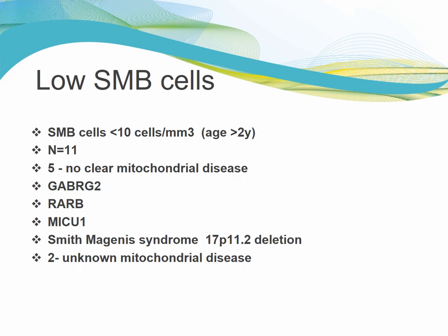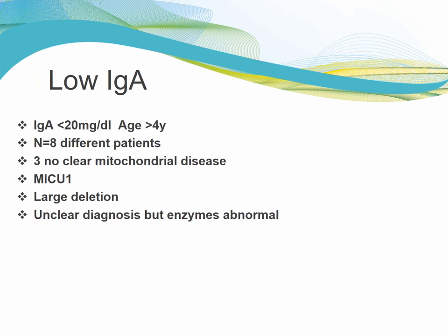I did a chart extraction on some of these patients. I pulled the folks who had really low switched memory B-cells over two years of age because it is an age-dependent cell type. There were 11 that fulfilled those criteria. Five had no clear mitochondrial disease. The three single-gene defects shown were GABRG2, RARB, and MICU1, as well as a patient with Smith-McGinnis syndrome, which is known to be associated with poor immunoglobulins. Two had no identified gene but had biopsies or complex one-through-four analysis strongly suggestive of mitochondrial disease. So clearly diverse genetic etiologies. For the low IgA group, I found eight patients that fulfilled pretty strict criteria. Three had no clear mitochondrial disease. This overlapped with the low switched memory B-cell group — the MICU1 patient is the same MICU1 patient. In addition, there was a patient with a large deletion and a patient with an unclear diagnosis but abnormal enzymes still being worked up.